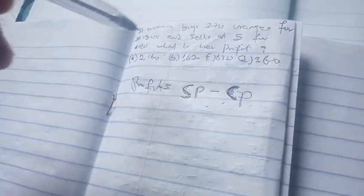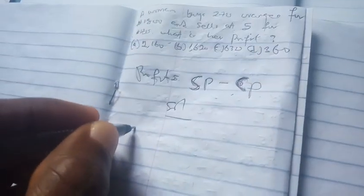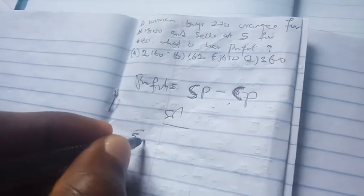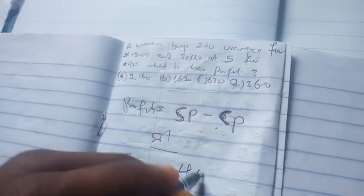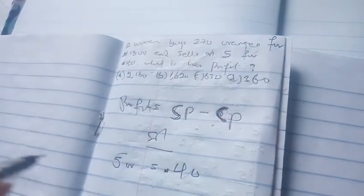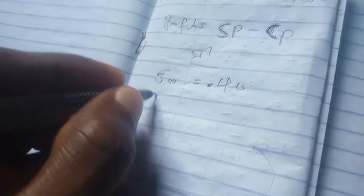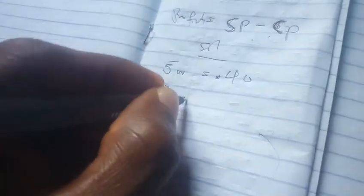She's selling 5 for 14 naira. So the solution to this would be: if she sells 5 oranges for 14 naira, how much will it be for 270 oranges?